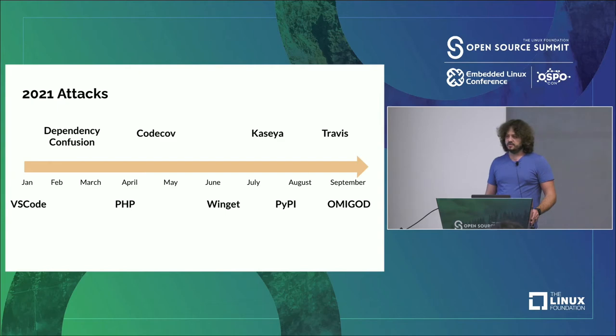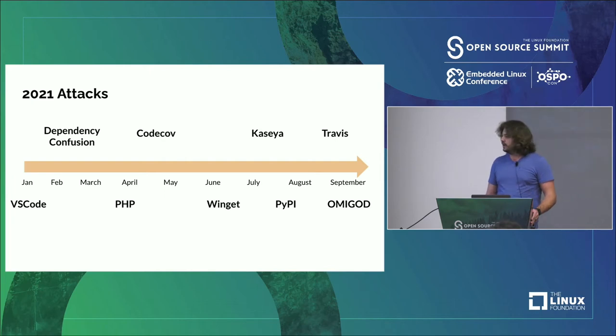PHP was another near miss where an actual attacker pushed forged commits directly to the upstream PHP Git repository because it wasn't secured correctly. The PHP development team caught it quickly, moved to GitHub instead of hosting it themselves. This has huge downstream implications because PHP is a language runtime pulled into websites all over the world.